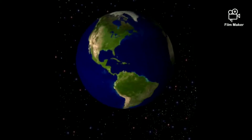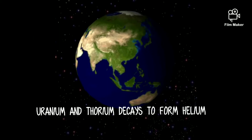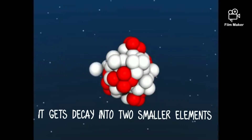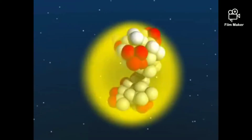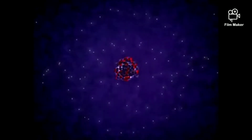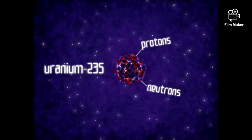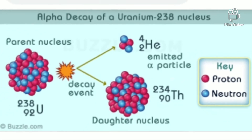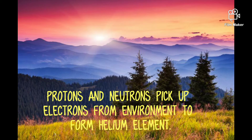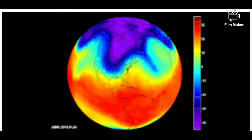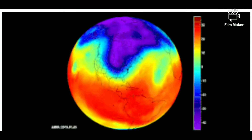On Earth, radioactive elements like uranium and thorium decay to form other smaller elements. The byproduct of these elements is a tiny fragment called alpha particles, which consists of two neutrons and two protons. These particles pick up electrons from the environment around them and turn into helium element, which gradually rises up through the crust. This is how helium is produced on Earth.